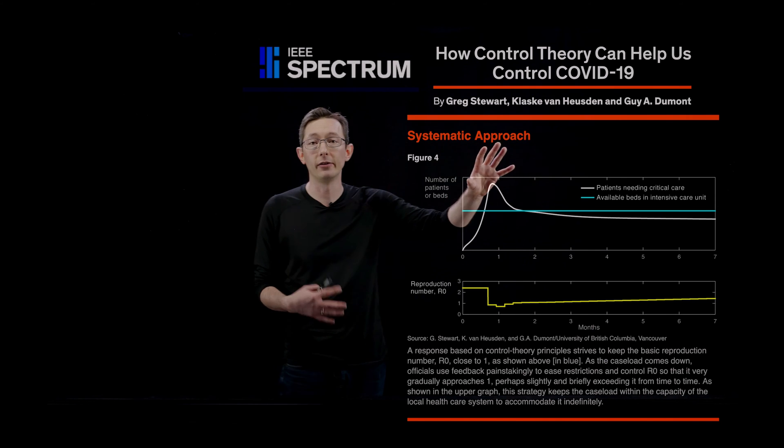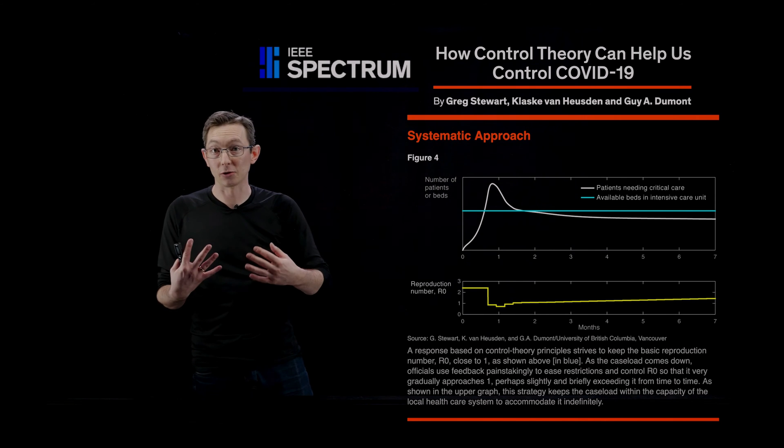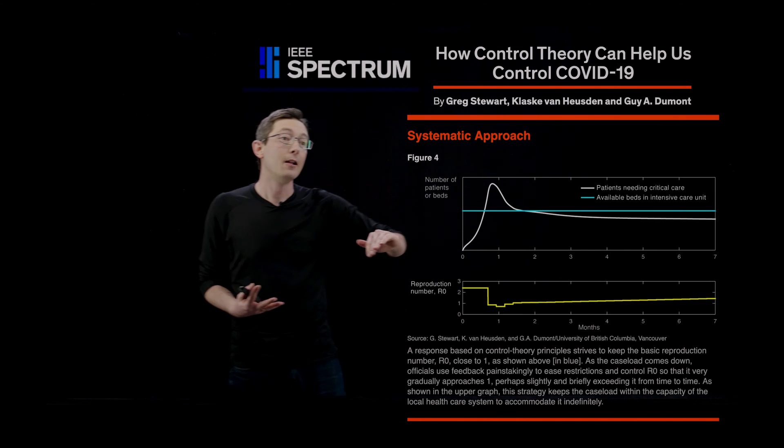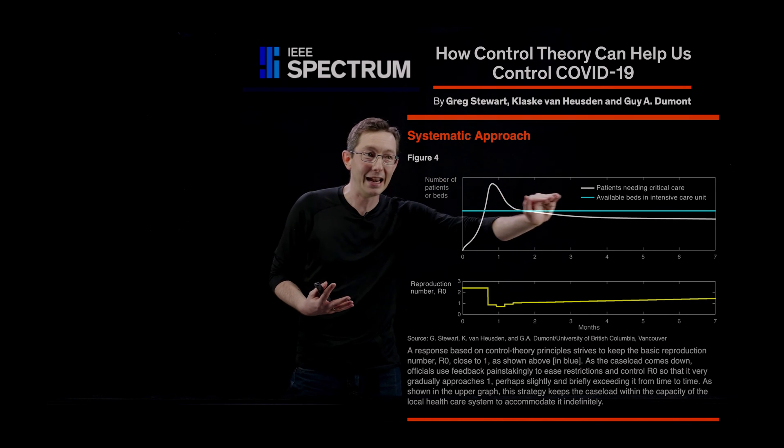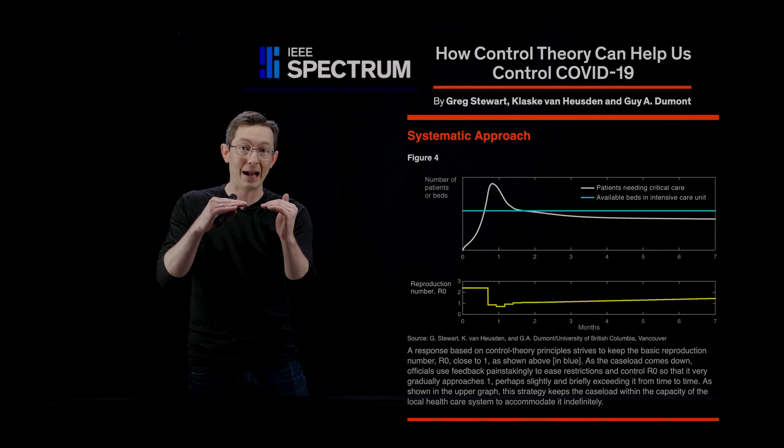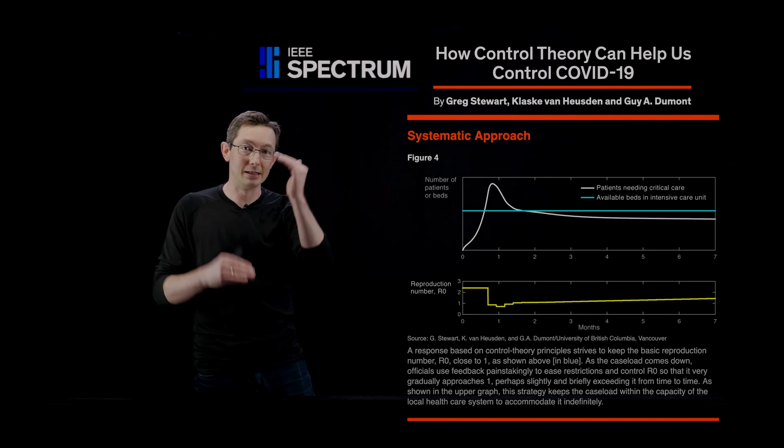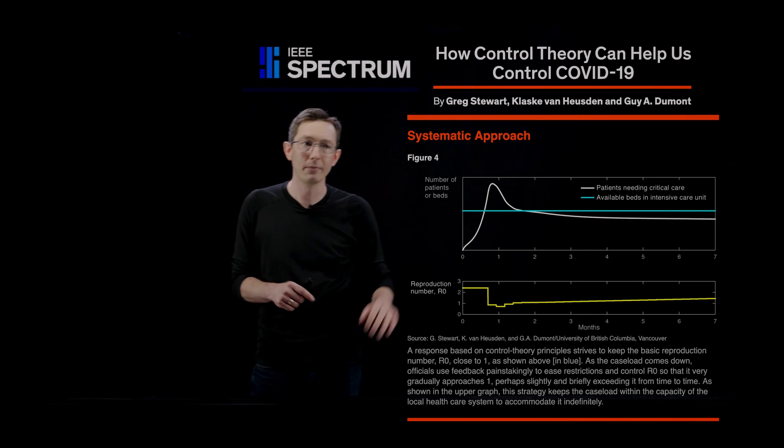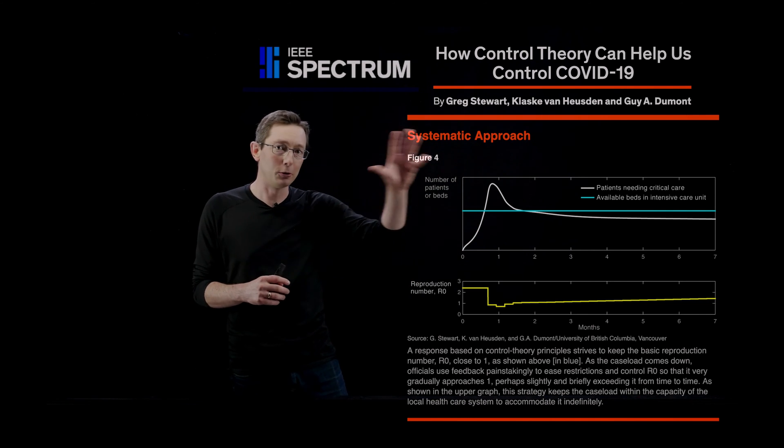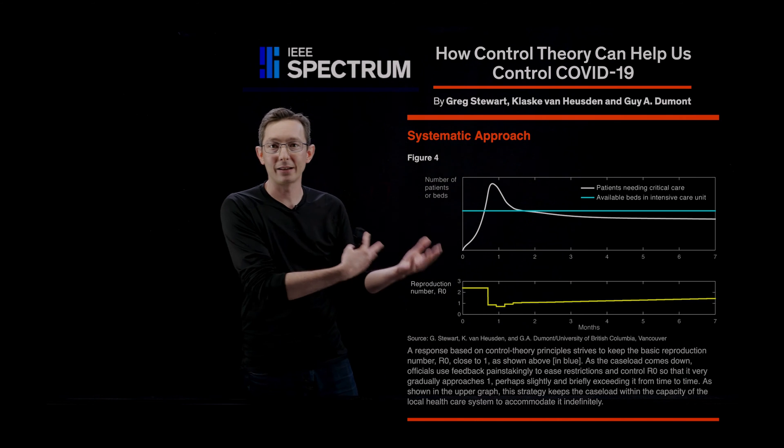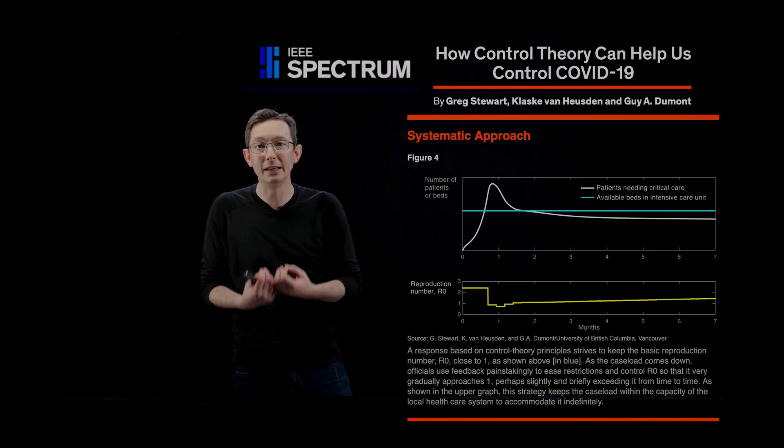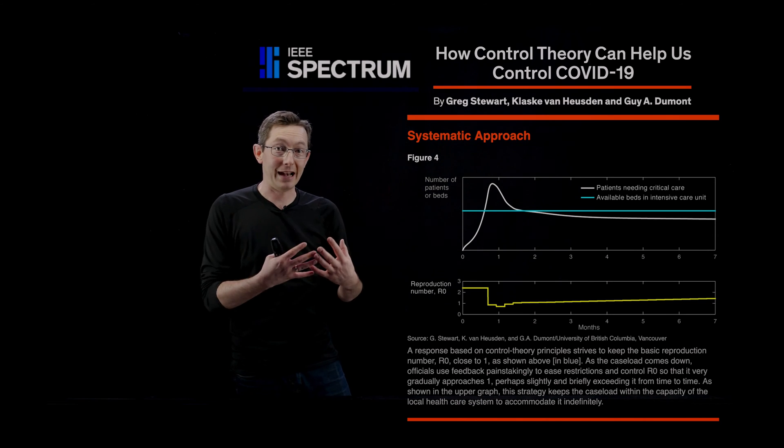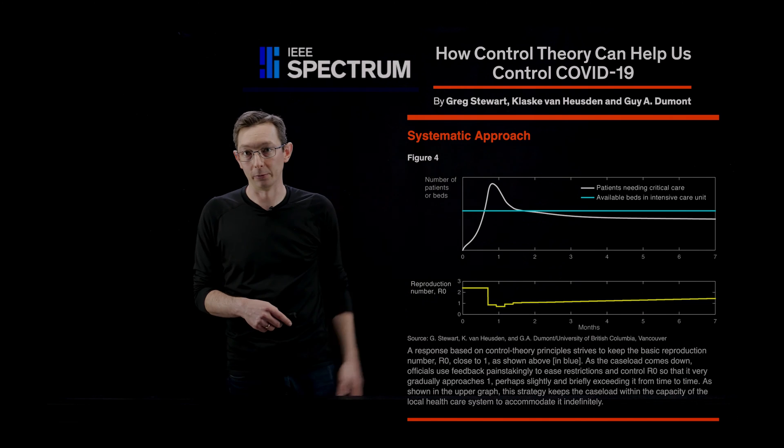One alternative is to use feedback control to measure the system extensively enough and quickly enough that you can essentially maintain this level that's below the healthcare capacity without doing this big bang-bang control that might last months or even years. But to do this feedback control strategy, to enact this feedback control, you need to have enough measurements of your system that are accurate enough and fast enough to be useful in real time.